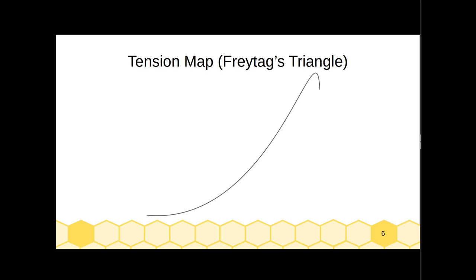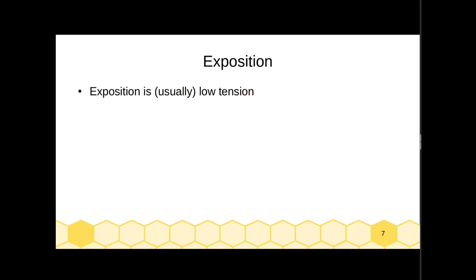The first part of this, where tension is low, is called the exposition. As tension rises, we call that rising action. We have the climax, and then again, falling action. And now we'll talk about each of these parts.